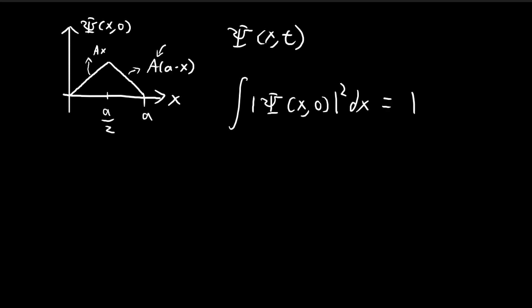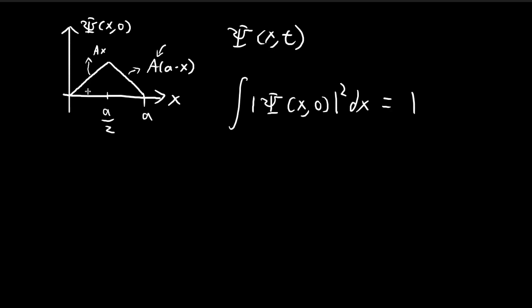So what should our integral look like? So let's substitute the numbers in. Because this initial wave function is composed of two parts, the integral can also be split into two parts, because that's just how our initial wave function is. It's defined by two separate functions. So from 0 to a over 2, it's equal to Ax.